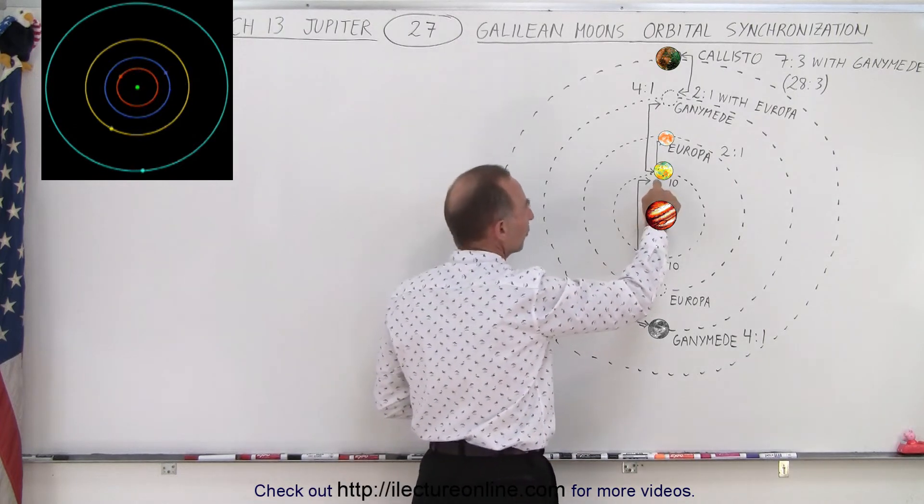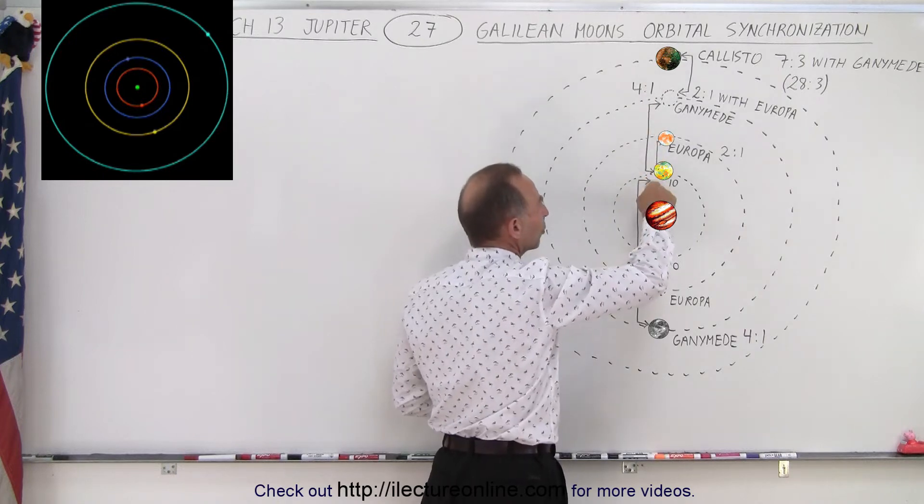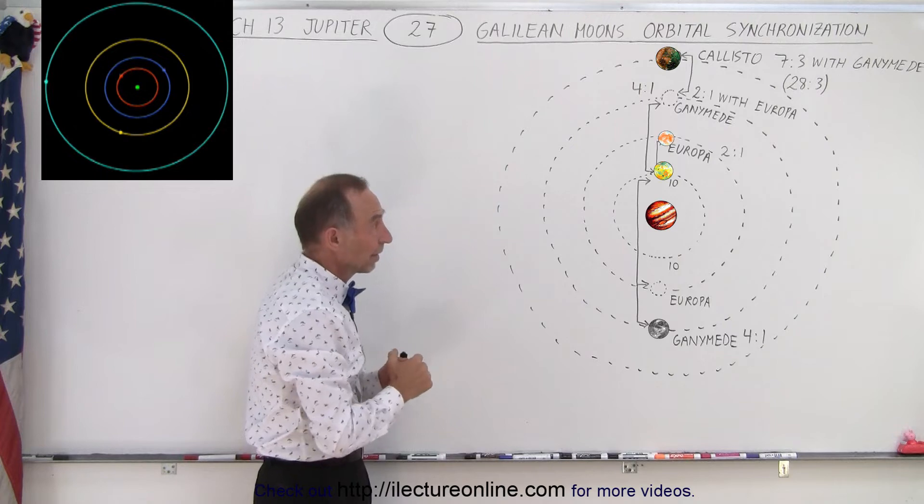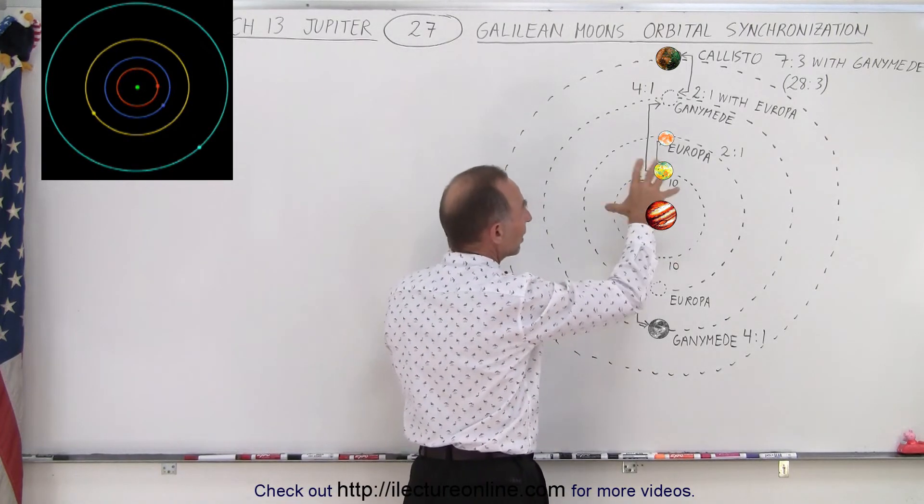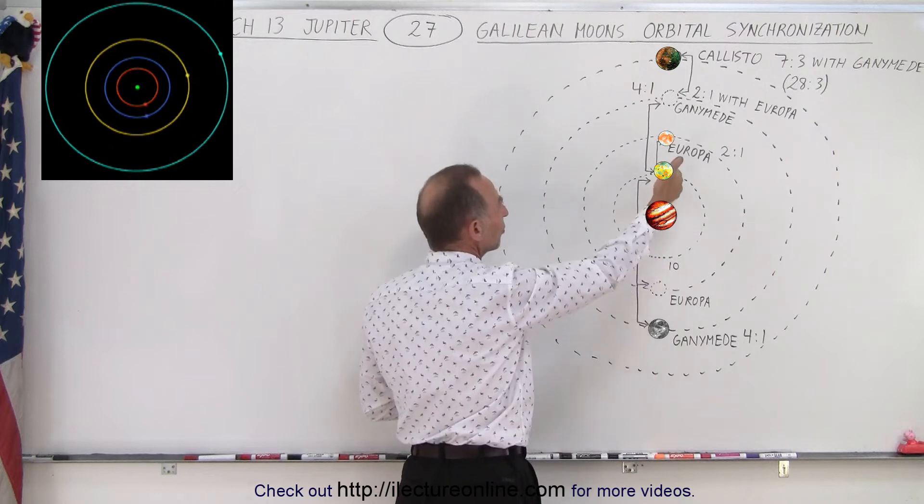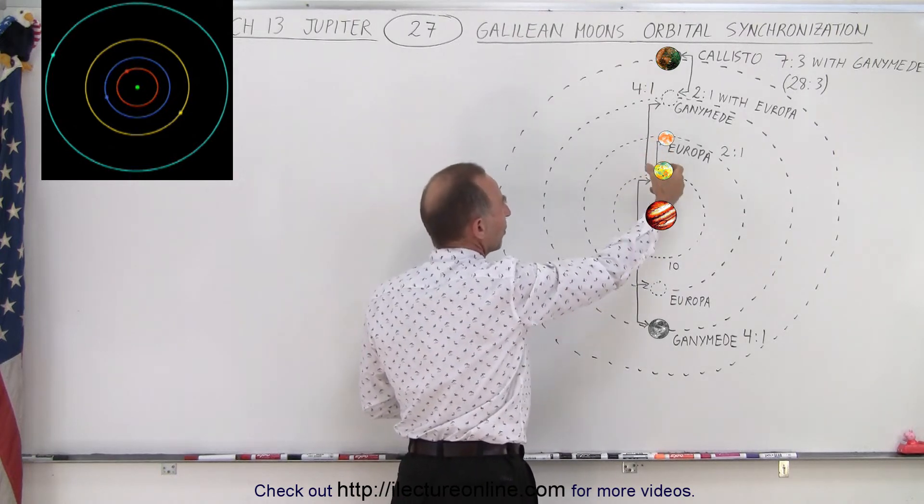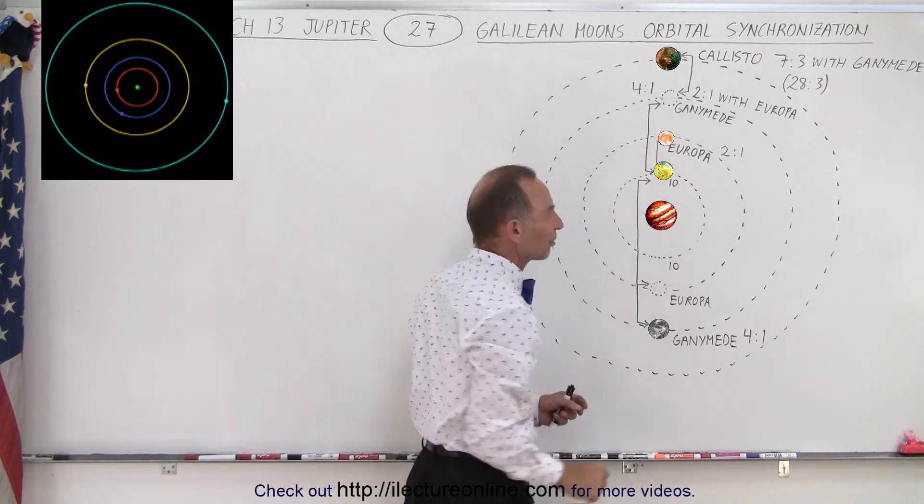That's not going to happen for the moons of Jupiter, because the strong tidal interaction between the four moons keeps them in nice, nearly circular orbits. And secondly, it also keeps them in place. So it prevents the bulge from pulling them faster, because the gravitational forces between the moons prevent that from happening. And so they stay in this nice synchronization.